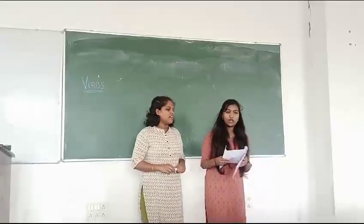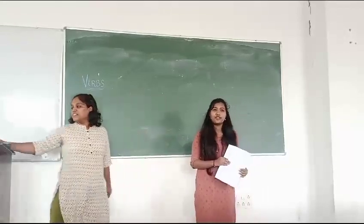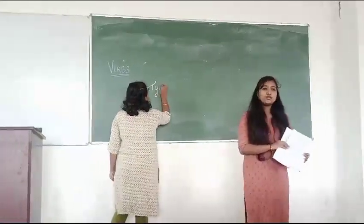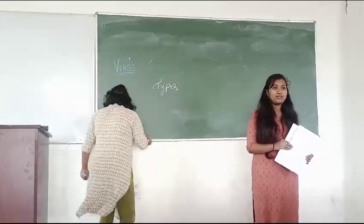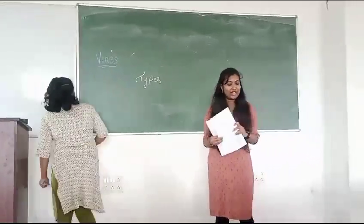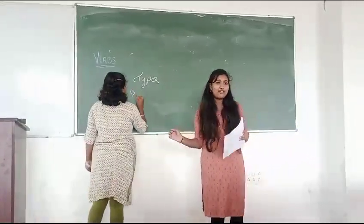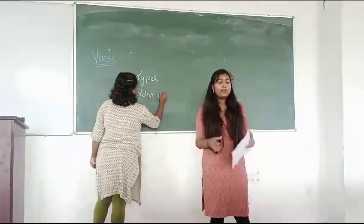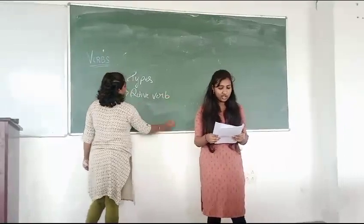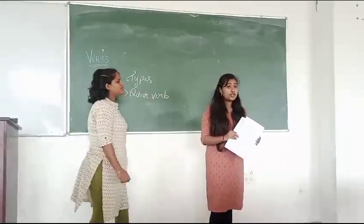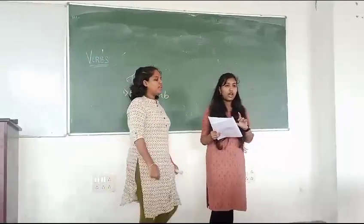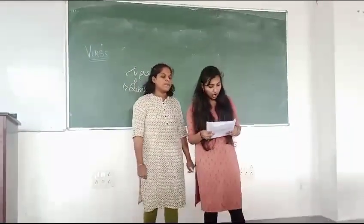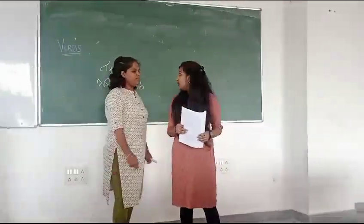Now let's look at the types of verbs. The first is action verbs. These verbs express physical or mental actions. For example, for physical action: 'She runs every morning,' and for mental action: 'I believe in myself.' 'Believe' is a mental state of action. Linking verbs help to link the subject and the noun or adjective — it acts as a bridge between two parts of a sentence, like 'The flowers will be delightful.'